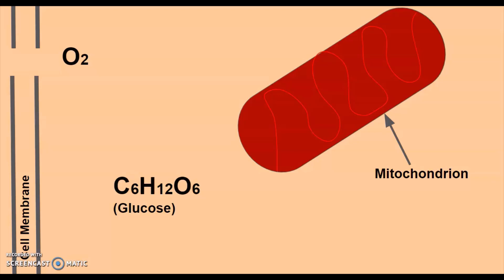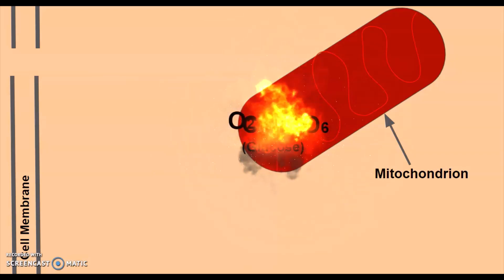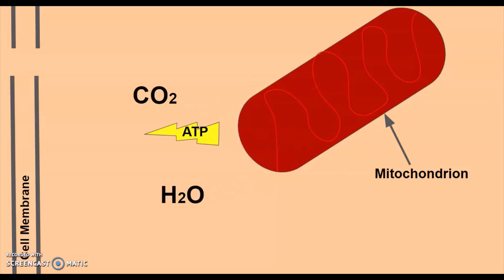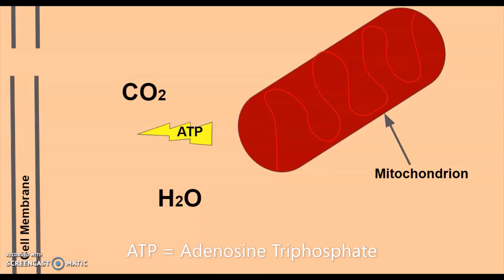Your body takes carbohydrates and converts them to glucose for cellular respiration. Oxygen and glucose meet up in your mitochondria where a chemical reaction takes place, and it makes ATP, which is energy.